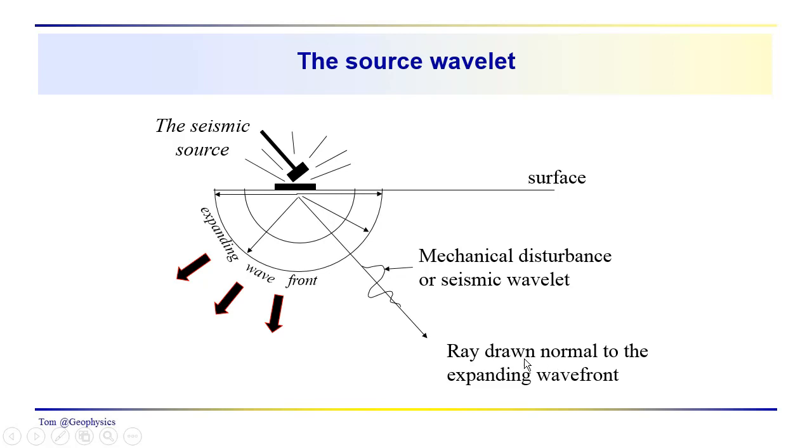These lines, which are drawn normal to the expanding wave front, are referred to as ray paths. We'll be using these ray paths quite a bit when we start to characterize quantitatively the time distance relationships for various events that we talked about last time: the reflection event, the critical refraction, direct arrival, and so on.